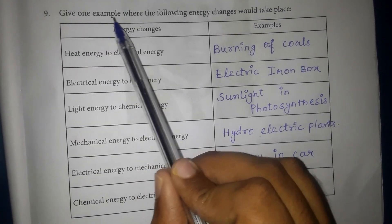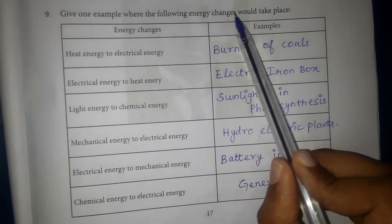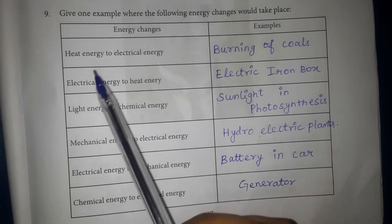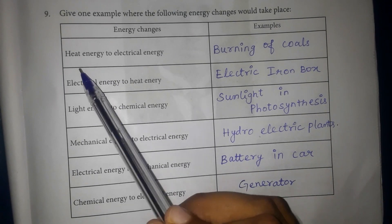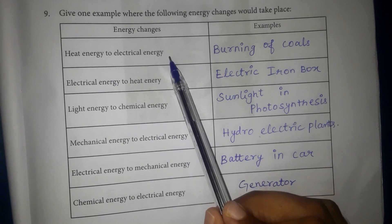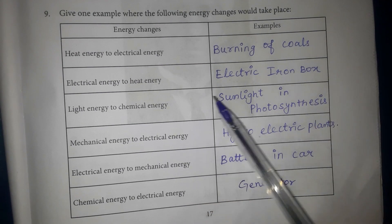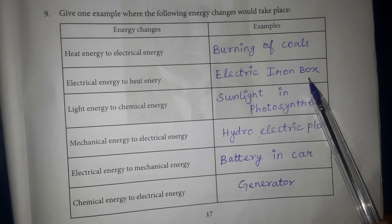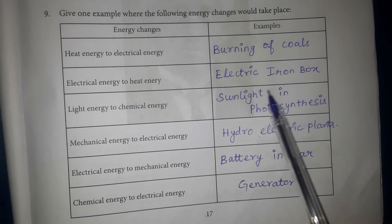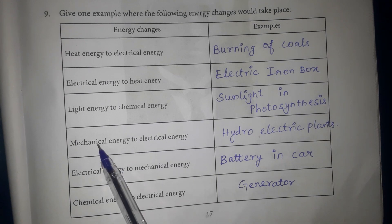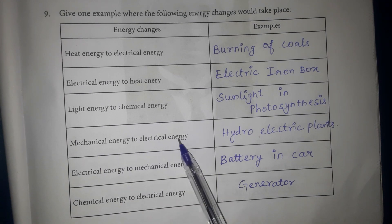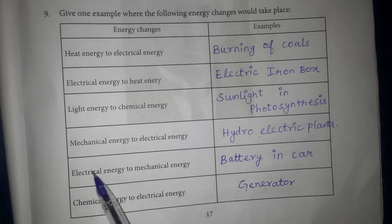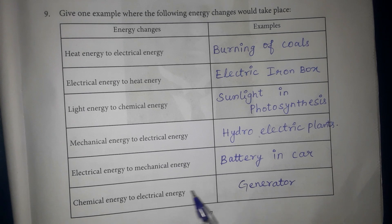Ninth question: give one example where the following energy changes would take place. Heat energy converted into electrical energy — burning of coals. Electrical energy to heat energy — electric iron box. Light energy to chemical energy — sunlight in photosynthesis. Mechanical energy to electrical energy — hydroelectric plants. Electrical energy to mechanical energy — battery in car. Chemical energy to electrical energy — generator.